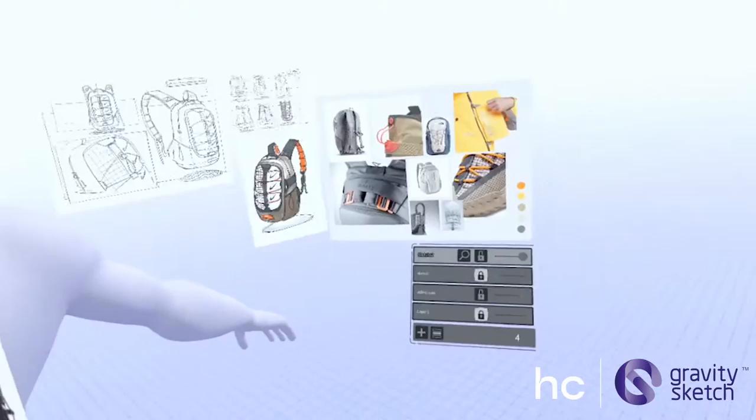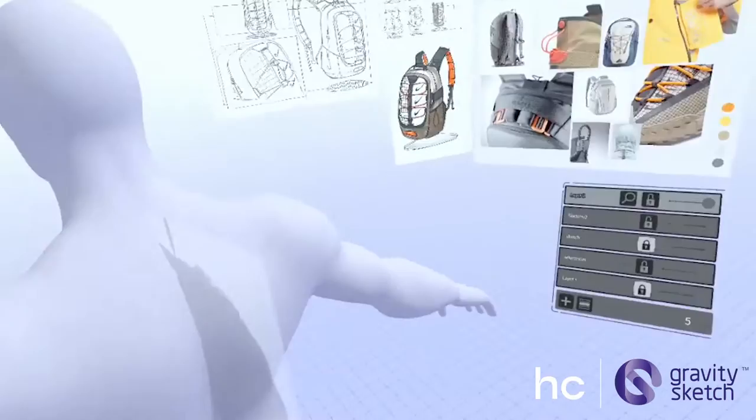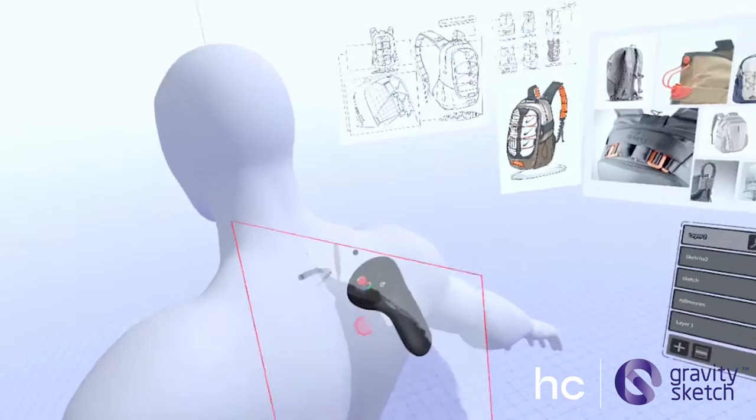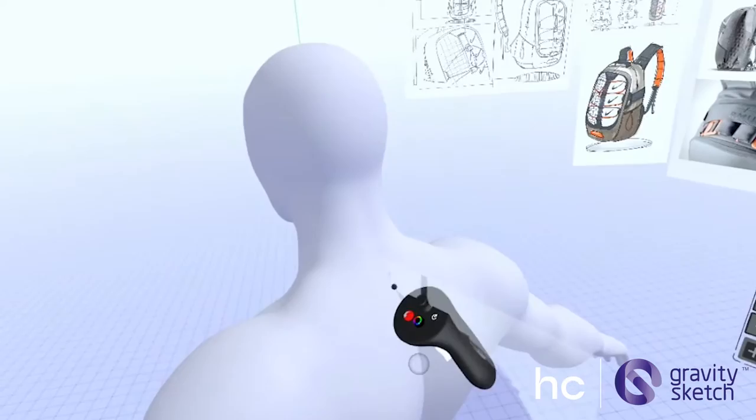I'll just turn down the opacity on that and now we've got a nice underlay to start sketching with. I think I'm going to go for just a really dark grey using the standard drawing tool and just start laying down some touch points where the bag would touch the body.